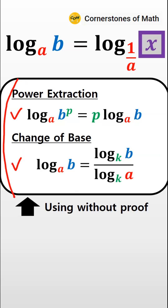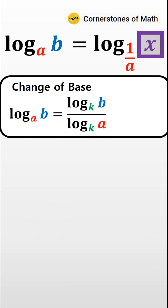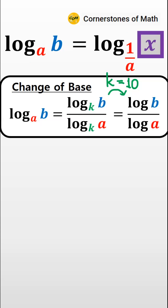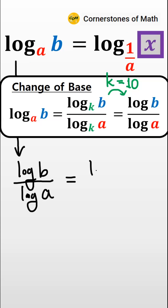I know that these properties must also be proved if you really want to be thorough, but the length of this video should be short. So first, let's use this base changing formula and use the common logarithm with base 10. Then we have: common log B over common log A equals common log X over common log 1 over A.